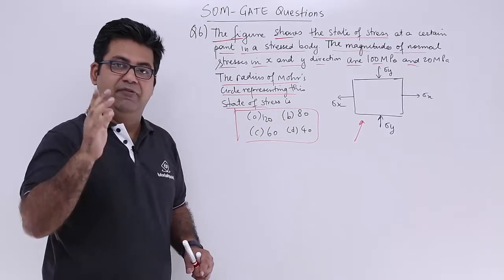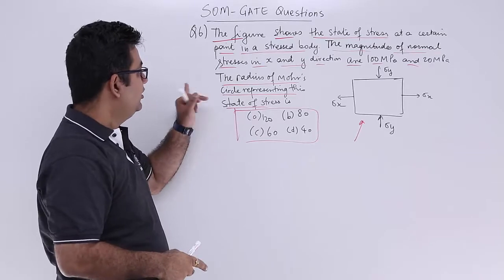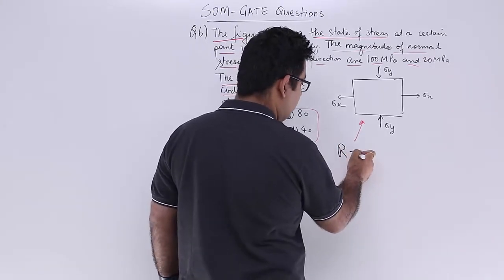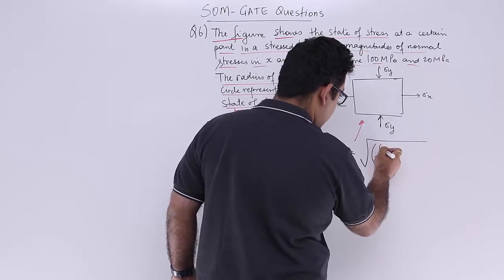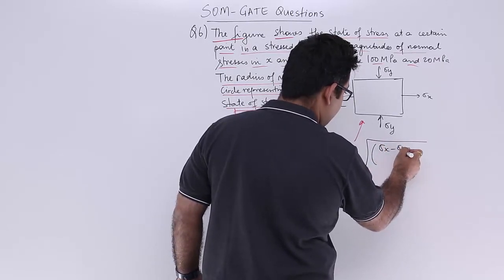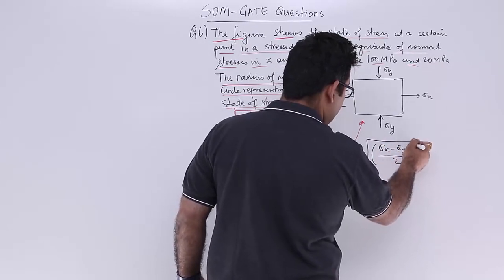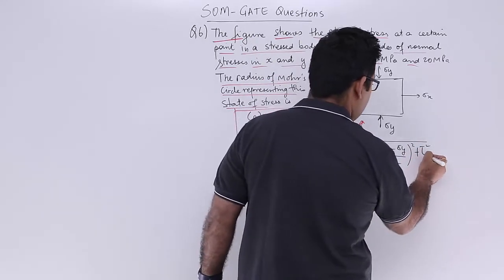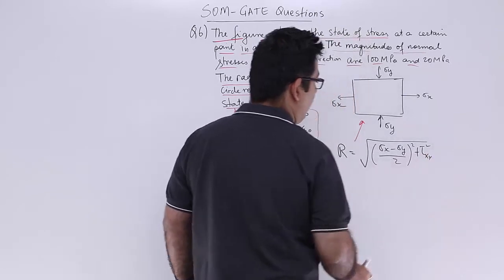So very first, you need to find out the radius of Mohr's circle. Write down that formula. The radius of Mohr's circle is under root sigma x minus sigma y upon 2 whole square plus tau square. This tau is in xy direction.